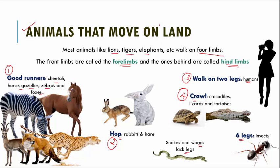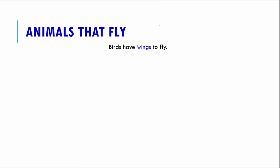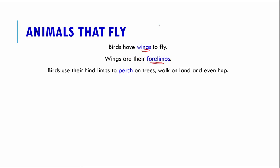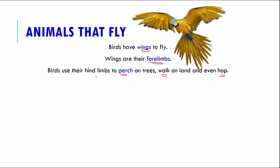Now let us look at animals that can fly. To fly, animals need special organs called wings, which are nothing but modified forelimbs. When wings move up and down, they push the animal forward through air. Birds use their hind limbs to perch on trees, walk on land, and even hop. Their small, light bodies also make it easy for them to fly.